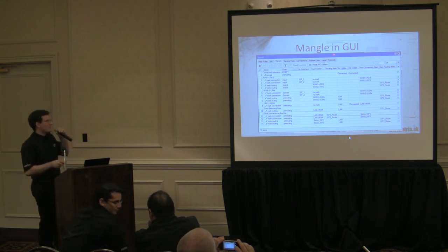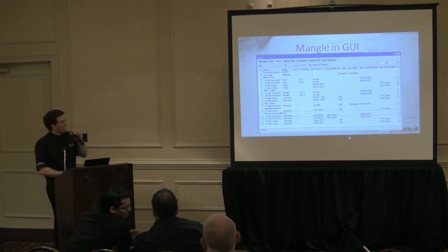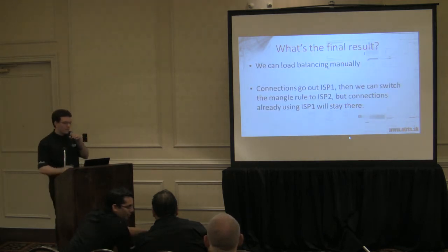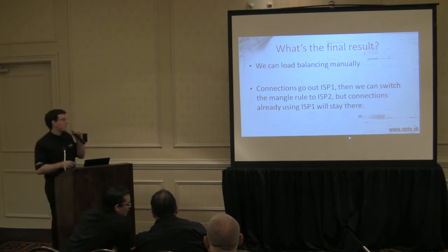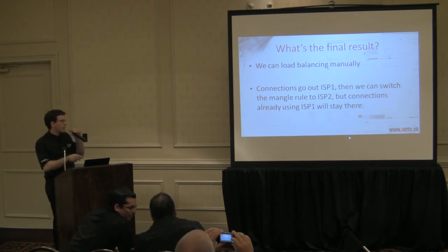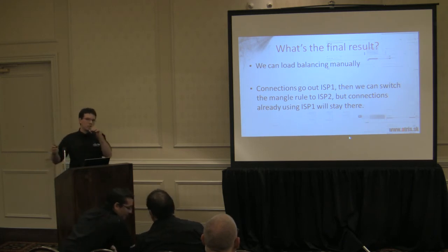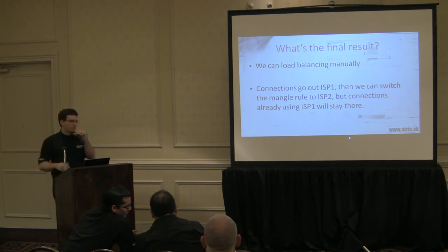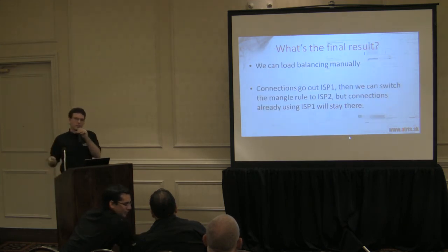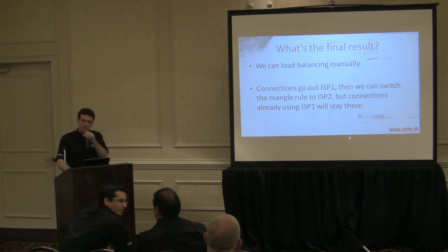This is how your mangle table should look in Winbox with all the proper rules. It's a lot of stuff, but comments are added so you can see what happens where. The final result: we can load balance manually now. When a new connection comes to the router it gets put out the ISP1 interface, but if we switch the routing to ISP2, all the connections that already started on ISP1 stay there. Connections once established to ISP1 always stay there, and we can decide when to switch to ISP2.